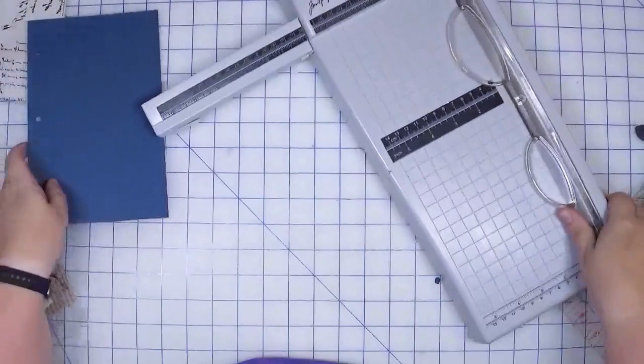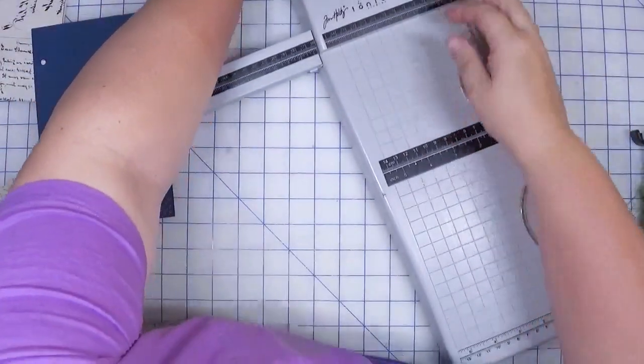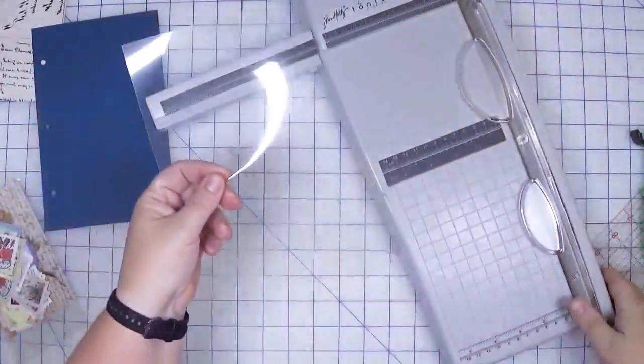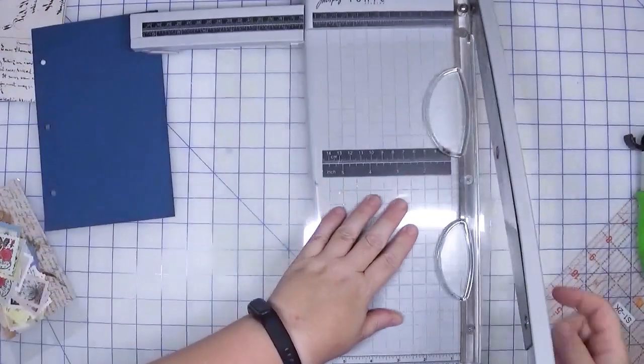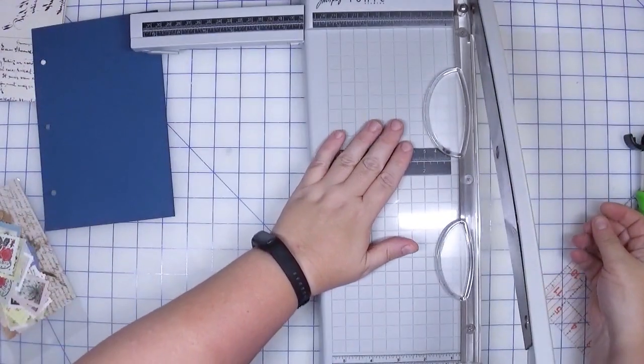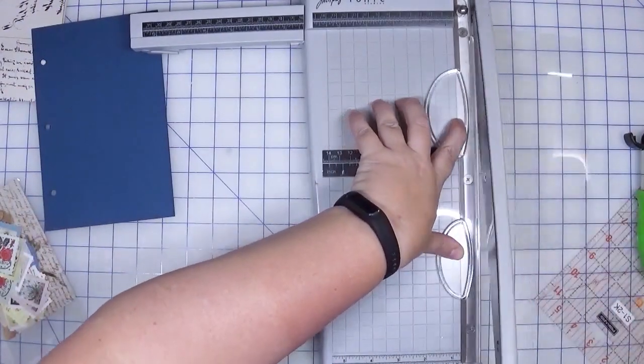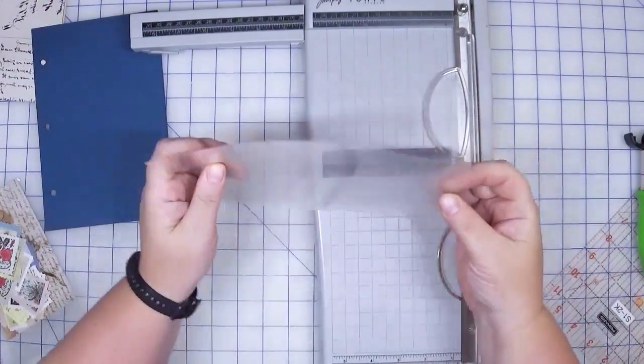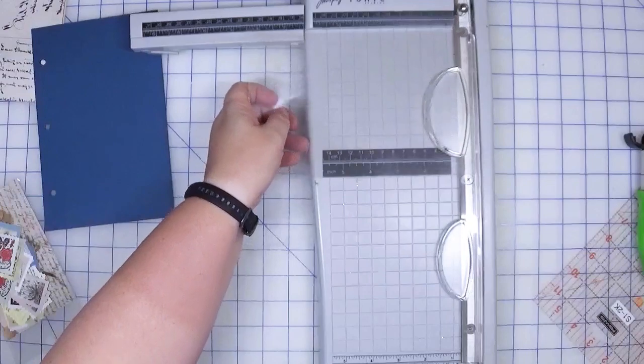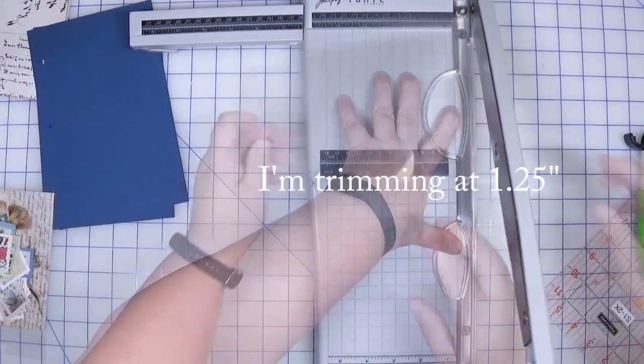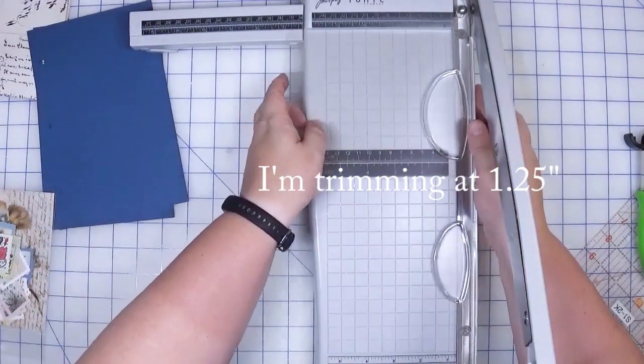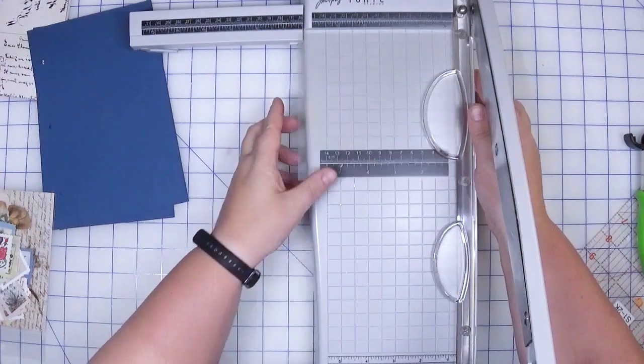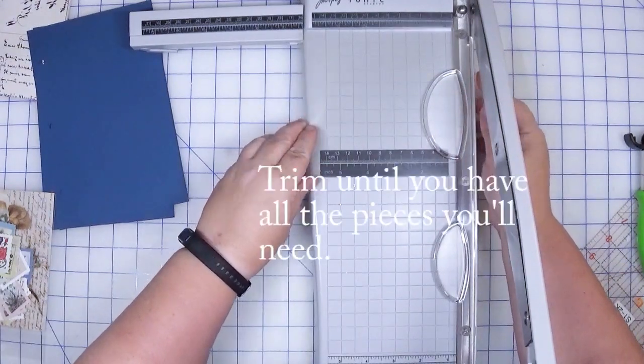Okay so that's done. Let's cut the transparency or acetate sheet. This came as eight and a half by eleven. We're going to trim it to five and a half, line it up, and we want to do it at an inch and a quarter.